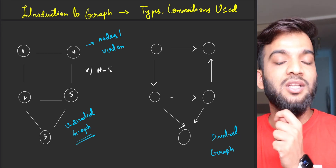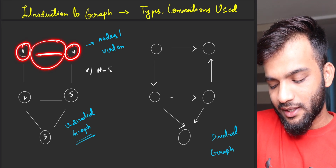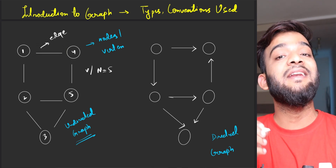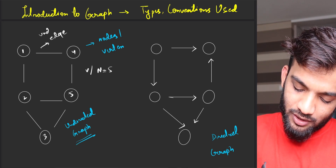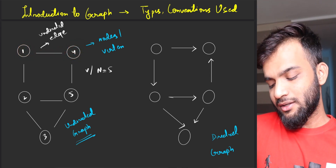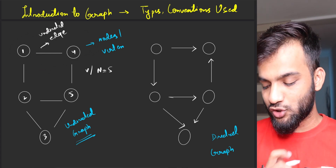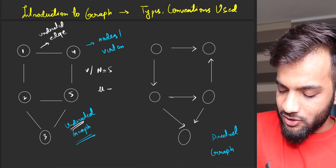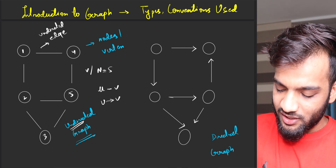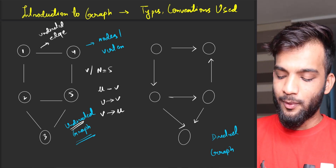We write the number of nodes as 5, also called V, which is the number of vertices. Now every node — if you see these two nodes are connected by a horizontal line. This horizontal line is referred to as an edge, specifically an undirected edge. Why undirected? Because the edge can go from 1 to 4 or from 4 to 1 — it's a bi-directional edge. So whenever you see an undirected graph with an edge between u and v, it means there is an edge between u and v as well as between v and u.